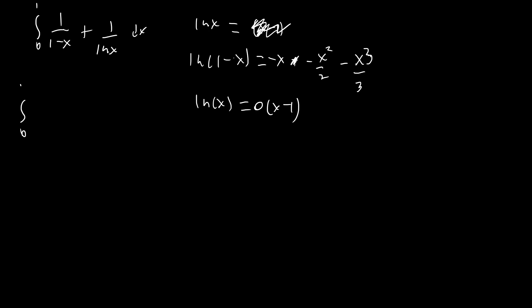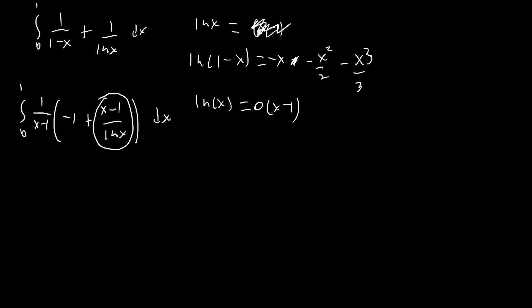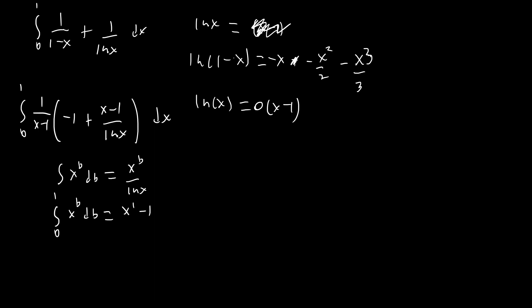The first thing I did is integrate from 0 to 1 and subtract out 1/(x-1), multiplied by negative 1 plus (x-1)/ln x dx. For any of you who have learned Feynman integration, this was probably one of the first integrals you did, because this is a common situation where we can substitute in another variable. The integral of x^b db equals x^b / ln x, so the bounded integral from 0 to 1 of x^b db is just (x-1)/ln x, and we can substitute that in.